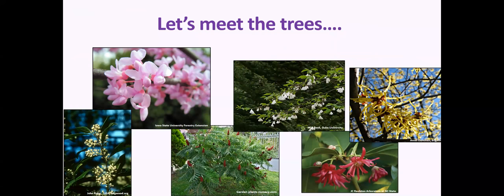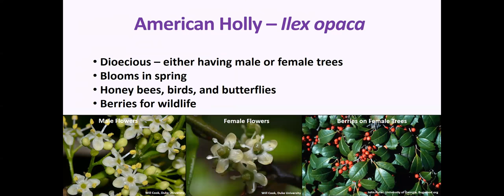But this is Trees for Bees — let's meet some of the trees we can incorporate into our urban and suburban forest. American holly is dioecious, meaning it has either male or female flowers. It blooms in the spring and is attractive to honeybees, birds, and butterflies. The berries are useful for wildlife as well. A lot of times we already have holly in our landscaping, but if we're hedging them and making them shrubs, the flowers and berries of wildlife value are not being allowed to be present. Maybe it's not that we don't have those aspects, but can we manage them differently to be beneficial to pollinators and wildlife?